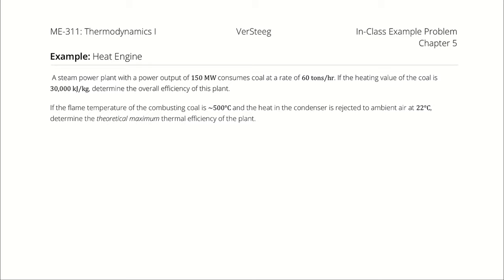Then, if the flame temperature of the combusting coal is about 500 degrees Celsius, and the heat in the condenser is rejected to ambient air at 22 degrees Celsius, determine the theoretical maximum thermal efficiency of the plant in those conditions.